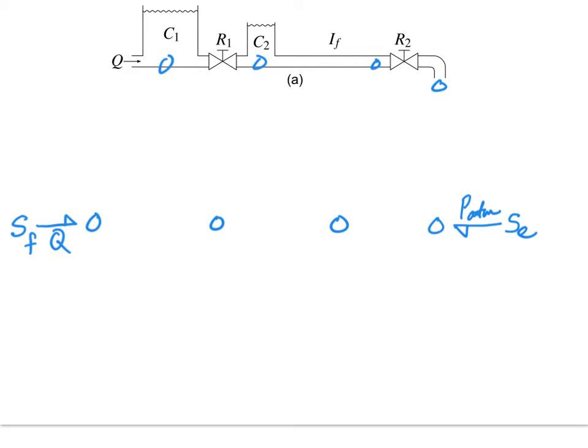Now we must determine if there are any elements directly associated with any of these zero junctions. If we look at this zero junction and this zero junction, each has an accumulator directly attached. So off of each of those respective zero junctions we'll place the respective accumulator.